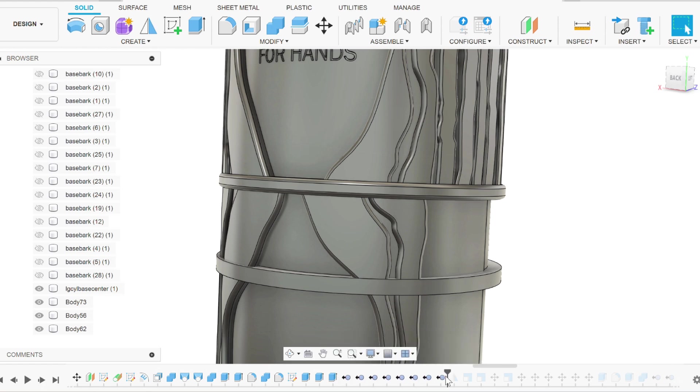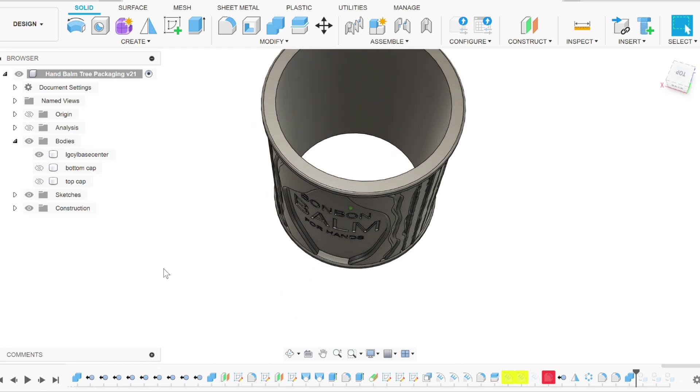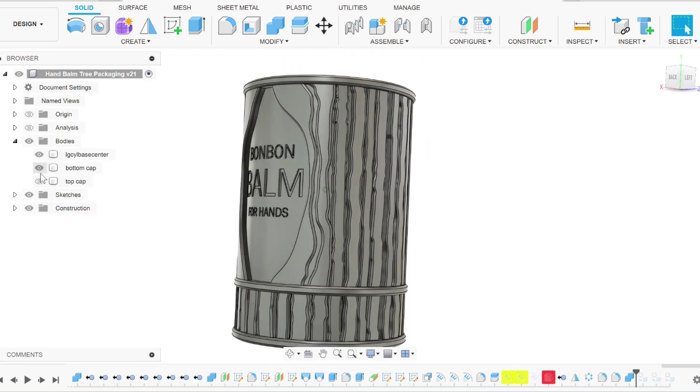Now I can model the bottom dial in a similar style. And I'm going to go ahead and print those parts first and see how everything looks before I start working on the top.